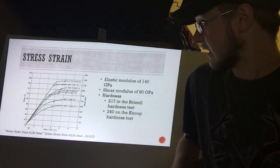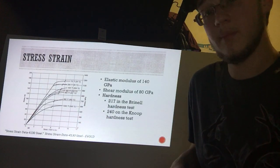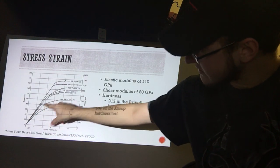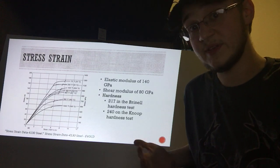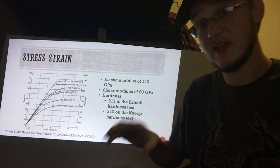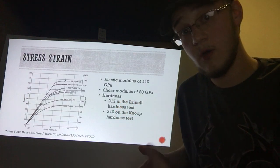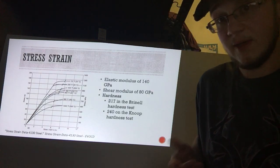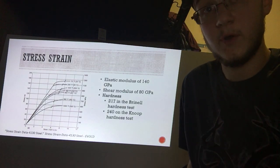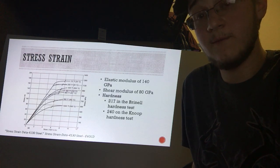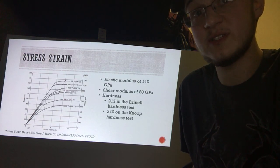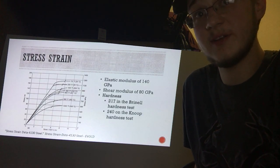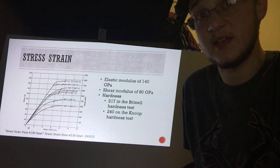Here we can see a stress-strain diagram of 4130 steel showing different lines going up at different temperatures. As the steel is heated up it can increase the amount of elongation, or stretch, that the material can suffer before it breaks. The elastic modulus of 4130 steel is 140 gigapascals. The shear modulus is 80 gigapascals, and it has a hardness of 217 on the Brinell hardness test and 240 on the Vickers hardness test.